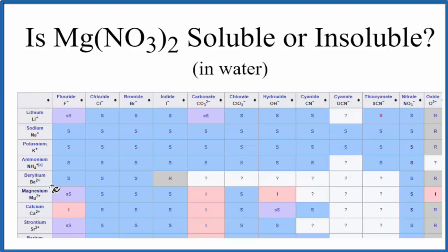We'll look for magnesium first, and here's magnesium, so these are the positive ions, the cations. Across the top, the negatives, the anions, and over here, there's nitrate. So we go down, and then we go over.